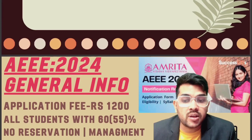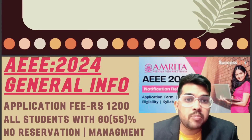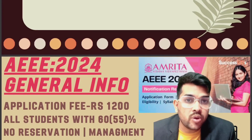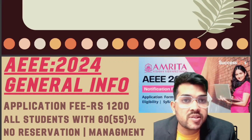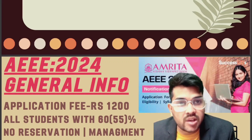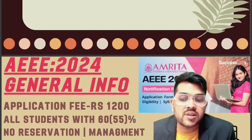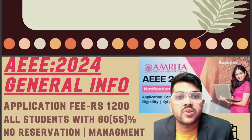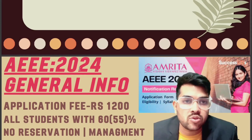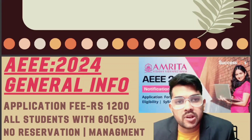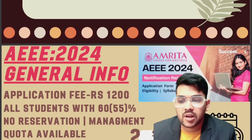You need at least 55% marks in Physics, Chemistry, and Math separately to be eligible. For example, suppose your aggregate marks is 60% but in Physics you have 56 or 57, or in Math you have 56 or 57, and similarly for Chemistry - then also you are eligible for the examination.